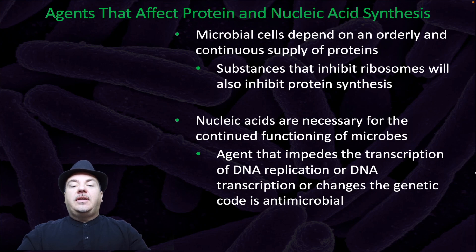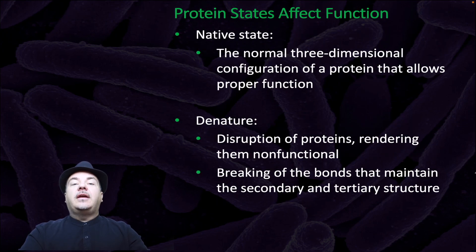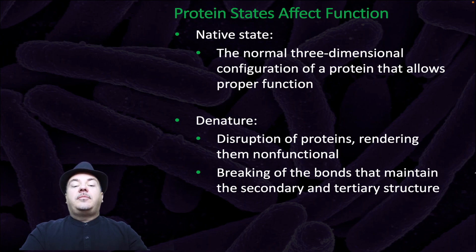Agents that affect protein and nucleic acid synthesis: microbial cells depend on an orderly and continuous supply of proteins. Substances that inhibit ribosomes will also inhibit protein synthesis. Nucleic acids are necessary for the continued functioning of microbes. Agents that impede DNA replication or transcription, or change the genetic code, are antimicrobial. Protein states affect function: the native state is the normal three-dimensional configuration of a protein that allows proper function. If you denature a protein, this is a disruption that renders it non-functional — it breaks the bonds maintaining secondary and tertiary structures, causing the protein to lose its shape and cease to function.